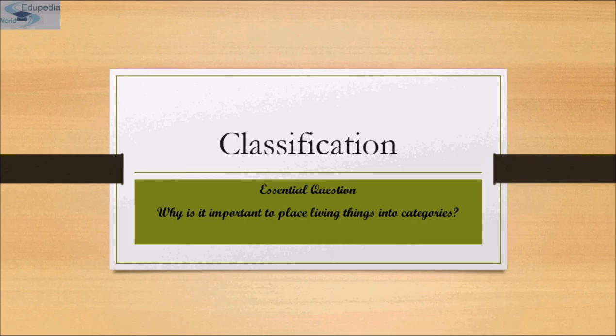As stated earlier, there are millions of plants and animals in the world. We know the plants and animals in our own area by their local names. These local names vary from place to place, even within a country. This would create confusion if we did not find ways to refer to the organism we are talking about. Hence, there is a need to standardize the naming of living organisms such that a particular organism is known by the same name all over the world. This process is called nomenclature.